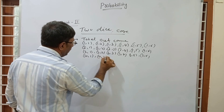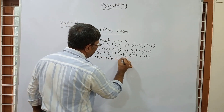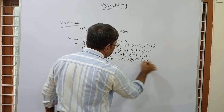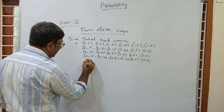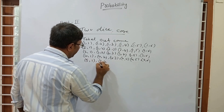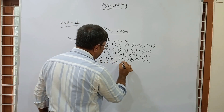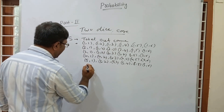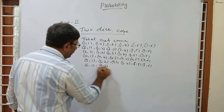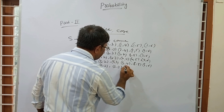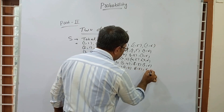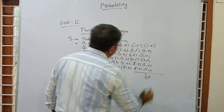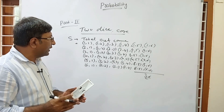If the first die shows 3: (3,1), (3,2), (3,3), (3,4), (3,5), (3,6). If 4: (4,1), (4,2), (4,3), (4,4), (4,5), (4,6). If 5: (5,1), (5,2), (5,3), (5,4), (5,5), (5,6). If 6: (6,1), (6,2), (6,3), (6,4), (6,5), (6,6). Each row has 6 pairs, so the total number of pairs is 36.